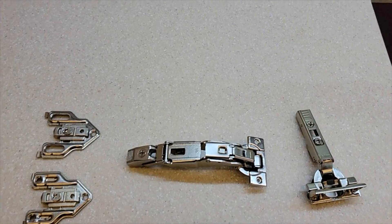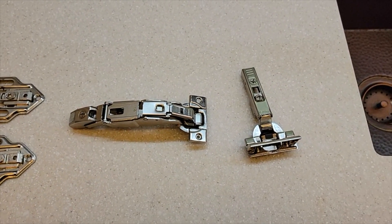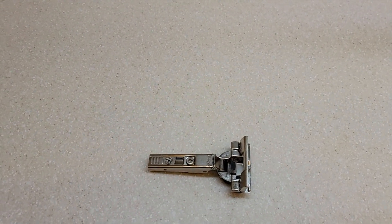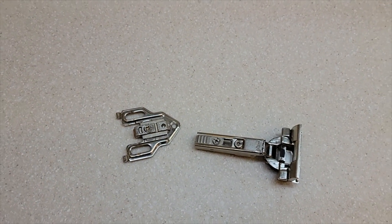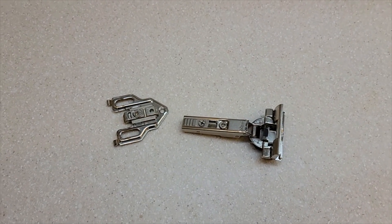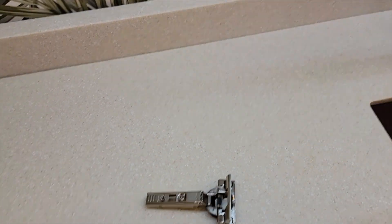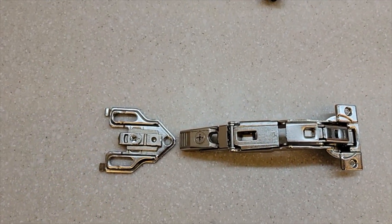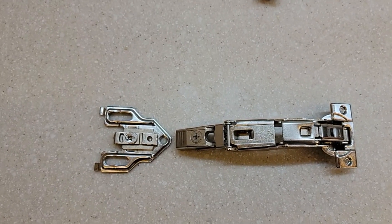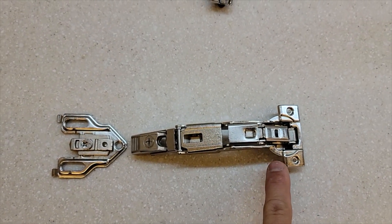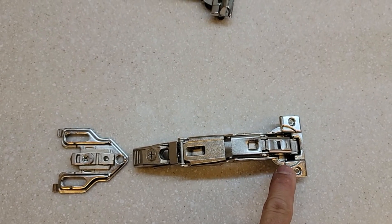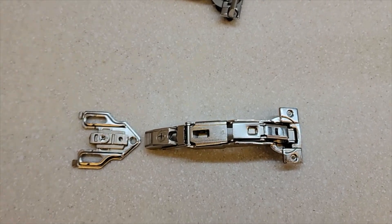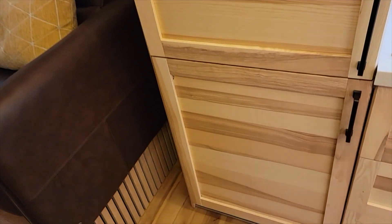So to recap, for a normal three quarter inch overlay, which would be two doors sharing one piece of 8020, you're going to use these two pieces and the standard hole spacing on the door. If you're doing a one and a half inch overlay, which would be the end of a cabinet typically, you would use these two pieces and you have to re-drill the hole where this hinge attaches to on the door—you have to move it inward three quarters of an inch. Once you get all that done, it works perfectly.